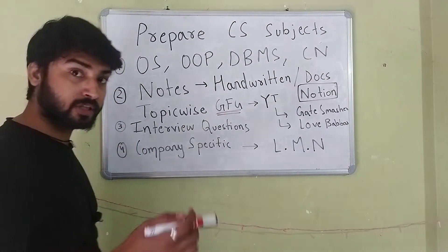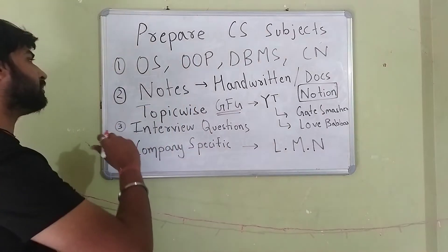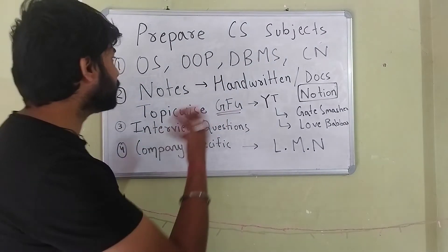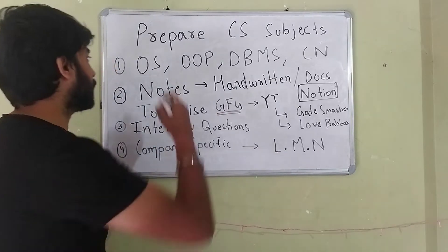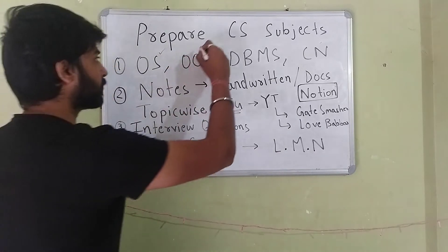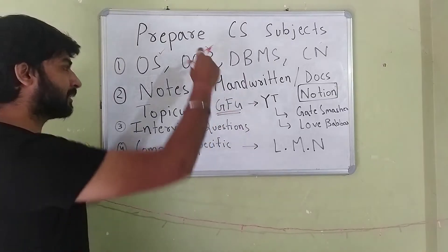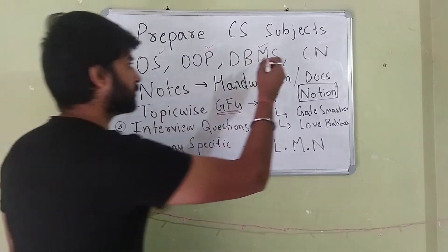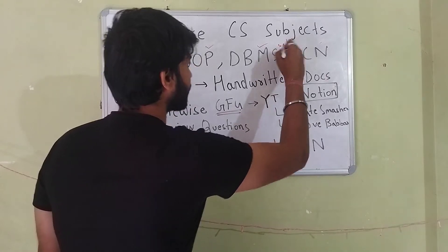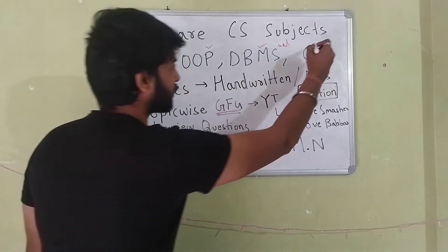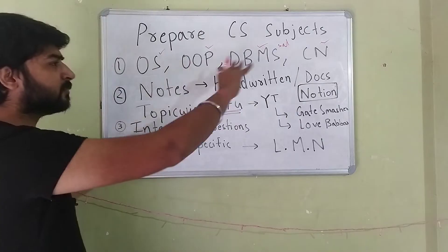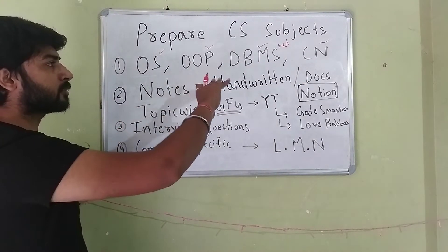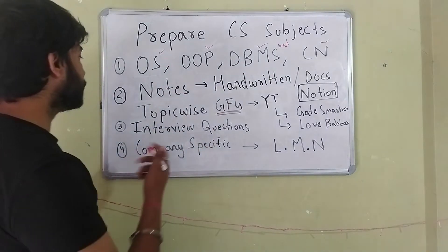The first thing is to know what subjects to prepare. The four major subjects from which questions are generally asked in interviews are: OS (Operating System), OOP (Object Oriented Programming - the theory aspects), DBMS (Database Management System) along with SQL, and Computer Networks. These are the four major subjects from which interview questions are generally formed.